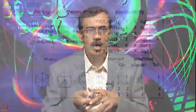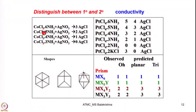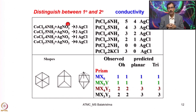Now let us look into how he distinguished between primary and secondary valency. He treated cobalt(3) chloride with excess ammonia and got a compound with the composition hexamine cobalt(3). When this compound was treated with excess silver nitrate, he could get 3 equivalents of silver chloride precipitating out.